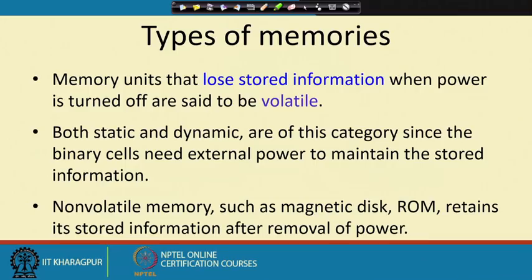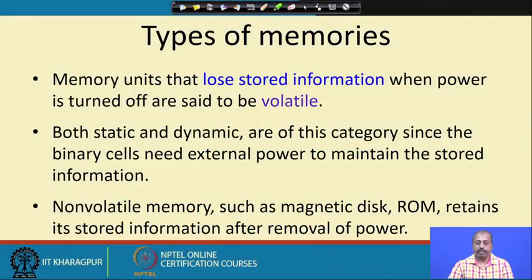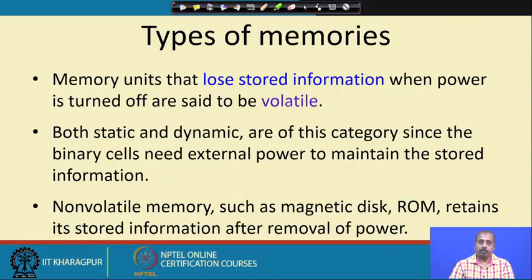Memory units that lose stored information when power is turned off are said to be volatile. Both static RAM and dynamic RAM are volatile since the binary cells need external power to maintain the stored information. There are non-volatile memories like magnetic disk and ROM that retain their stored information even after removal of power — in a ROM the information is stored permanently, but for RAM the content will be destroyed when power is removed.